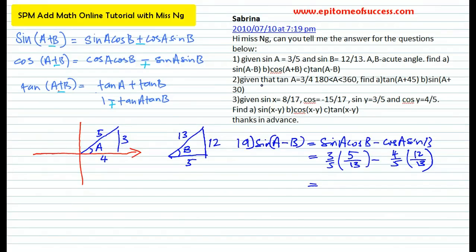I'd like to show you Question 2. Question 2 — they are all the same but with a slight variation. Question 2 says: given that tangent A is 3 over 4, and A is between 180 to 360.